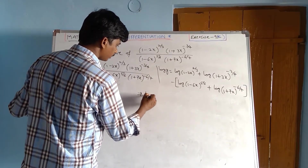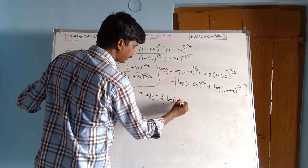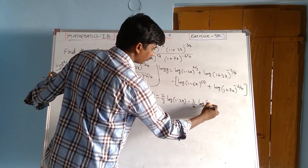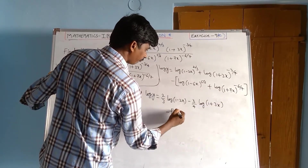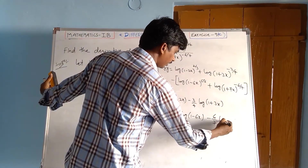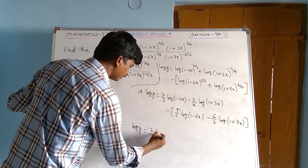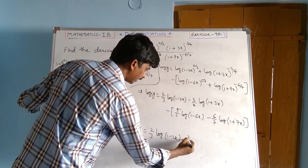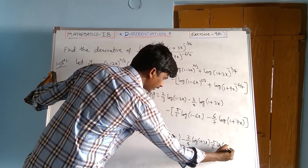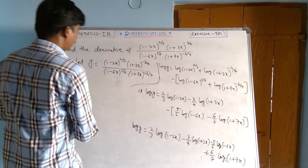Applying the power rule of logarithms: log y equals 2/3 · log(1 minus 2x), minus 3/4 · log(1 plus 3x), minus 5/6 · log(1 minus 6x), minus 6/7 · log(1 plus 7x). Then minus into minus becomes plus: so the last term becomes plus 6/7 · log(1 plus 7x).